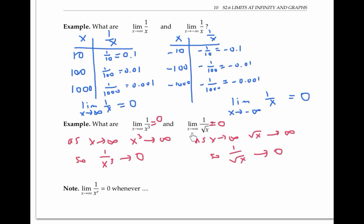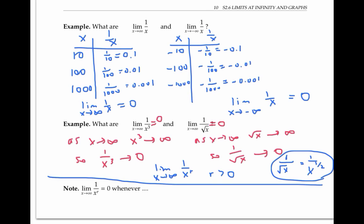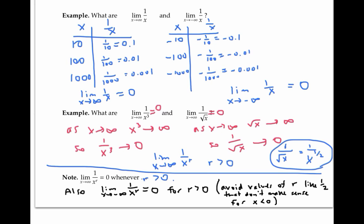Both of these examples are closely related because both have the form of the limit as x goes to infinity of one over x to the r, where r is a number greater than zero. The limit as x goes to infinity of one over x to the r is always equal to zero whenever r is bigger than zero. We can say the same about the limit as x goes to negative infinity of one over x to the r, as long as we avoid exponents like one half that don't make sense for negative numbers. For other valid values of r, as x goes to negative infinity, x to the r gets larger in magnitude, so one over x to the r heads towards zero.